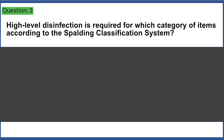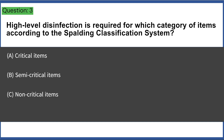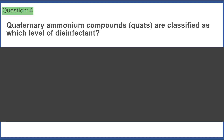High-level disinfection is required for which category of items according to the Spaulding Classification System? a) critical items, b) semi-critical items, c) non-critical items, d) environmental items. Answer: B, semi-critical items.